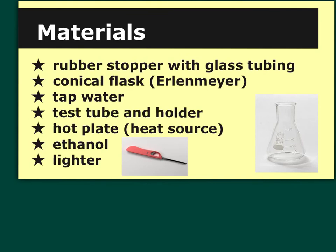For the combustion lab, the materials are: a rubber stopper with glass tubing, a conical (Erlenmeyer) flask, tap water, a test tube and holder, a hot plate, ethanol (which is a hydrocarbon — essentially drinking alcohol, but please do not drink it), and a lighter.